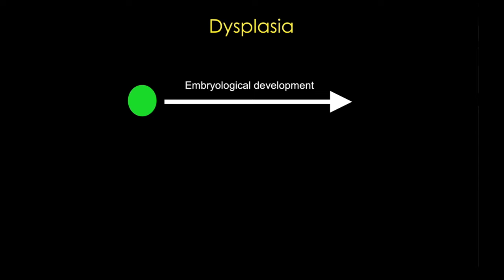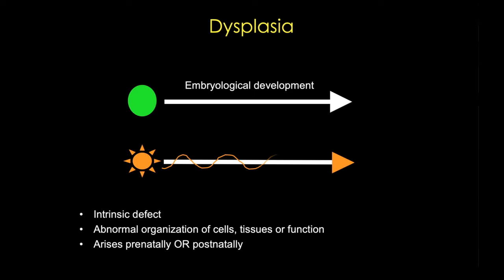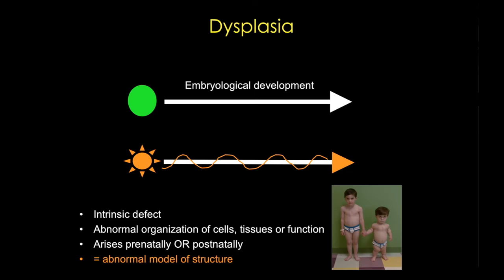Finally, we have dysplasia. Dysplasia is an intrinsic defect — it can be abnormal organization of cells, tissues, or function. Dysplasia can actually happen prenatally or postnatally, and essentially results in an abnormal model of the structure. Unlike the first three examples, dysplasia doesn't have to happen during a specific interval of development, and the clinical impacts can often get worse as the tissue continues to grow or function. Here I'm showing a young boy with a skeletal dysplasia called achondroplasia, where the dysplastic problem is with the cartilage, so that it doesn't form a normal bone model, leading to shorter bones.